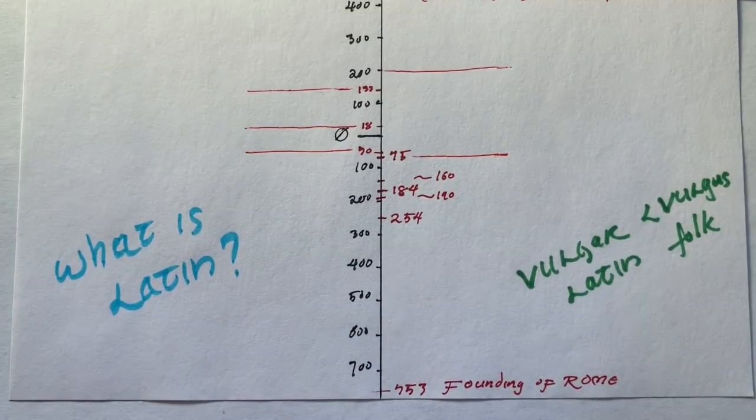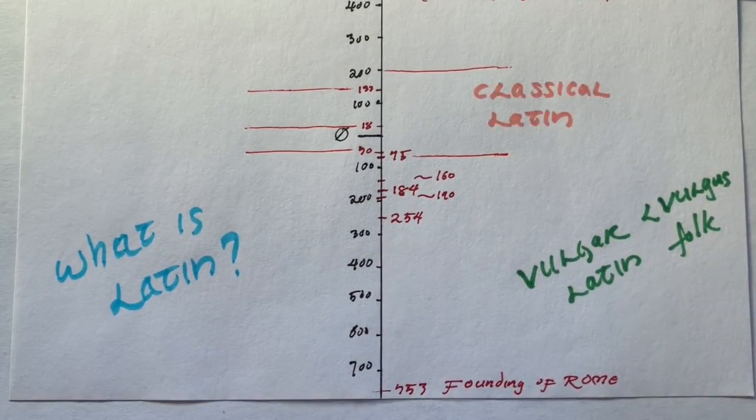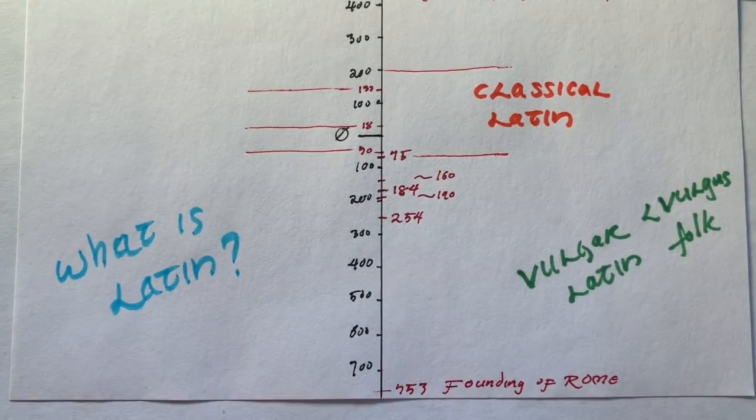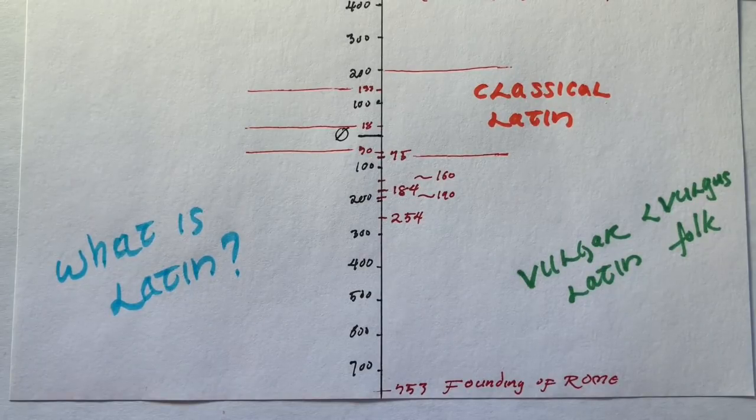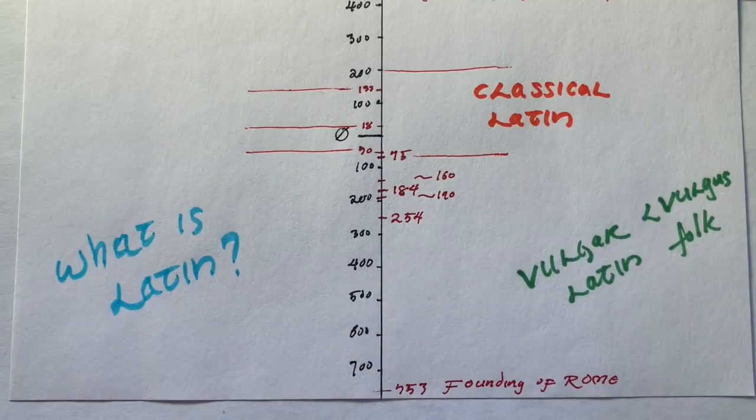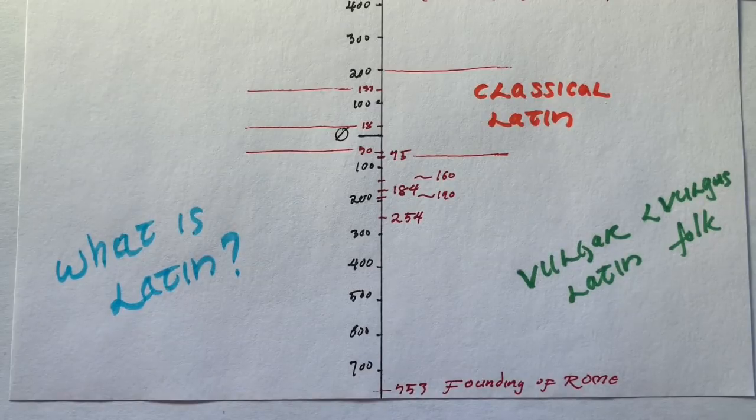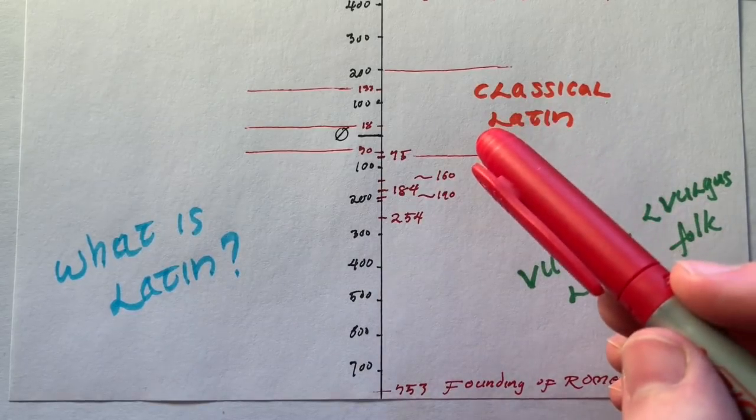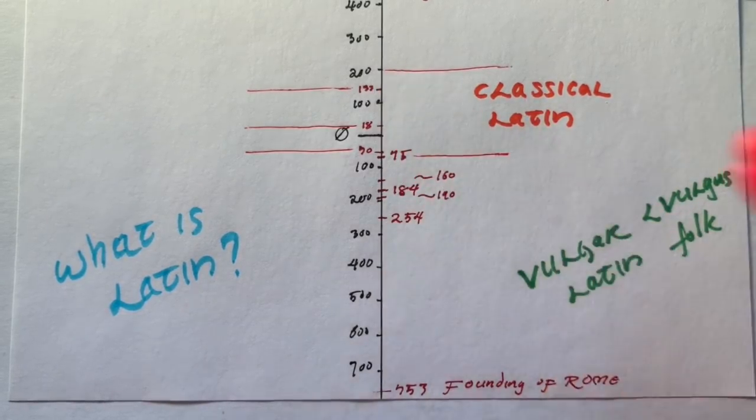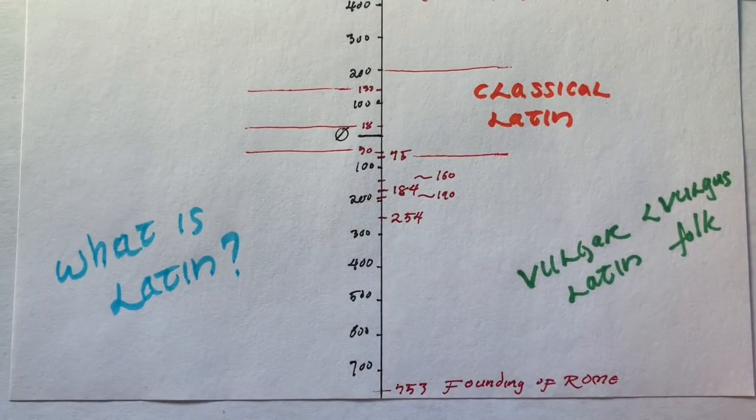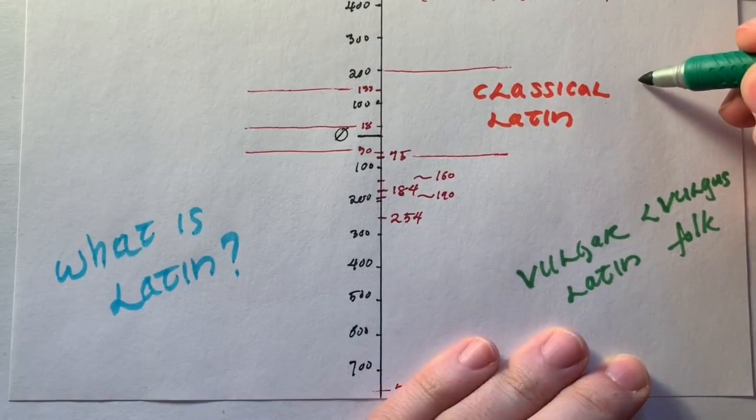This stands in contrast with what is called classical Latin, which occurs roughly between the years 75 BC and 200 AD. So let's explore the origins of Latin. Latin is descended from proto-Italic, referring to the languages that were variously spoken throughout Italy.